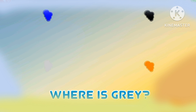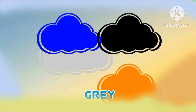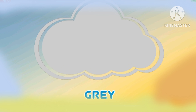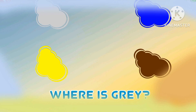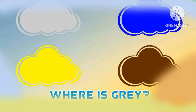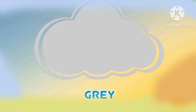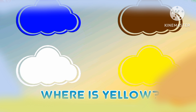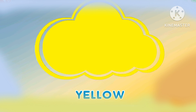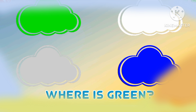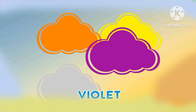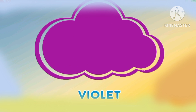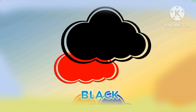Black. Where is gray? Gray. Where is orange? Orange. Where is gray? Black. Where is yellow? Blue. Where is blue? Blue.